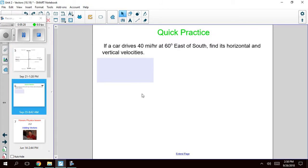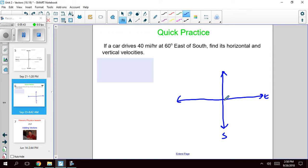Alright, so let's say we have a car. It is going 40 miles an hour at 60 degrees east of south. We need to be able to break these up into our horizontal components. So how do we do that? A little bit of trig.